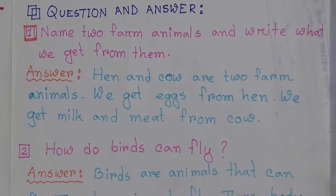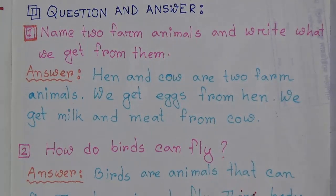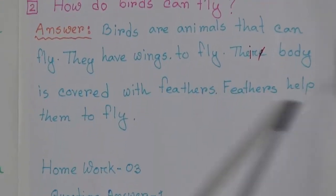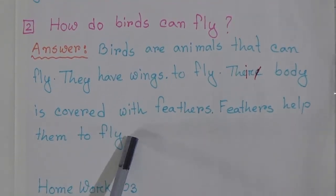Our second question is: how do birds fly? The answer is: birds are animals that can fly. They have wings to fly. Their body is covered with feathers, and feathers help them to fly.